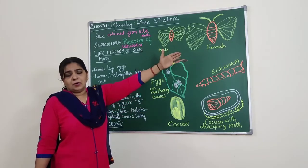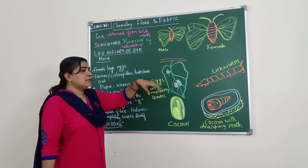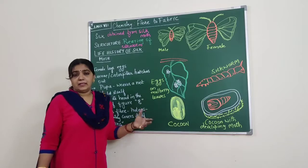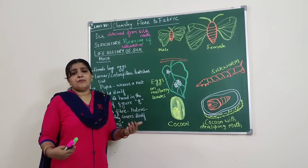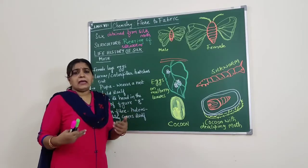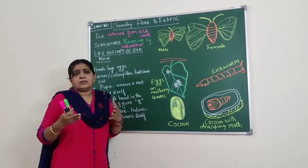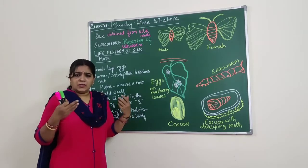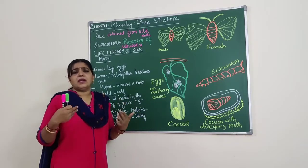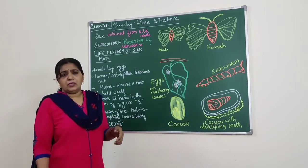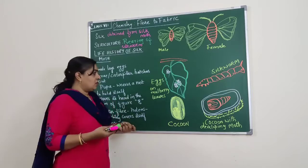The female silk moth lays eggs on the mulberry leaves, and the larvae hatch out from among the eggs. As soon as the larvae come out, they start feeding on mulberry leaves day and night. For about 25 to 30 days they feed day in and day out, and they grow enormously in size.